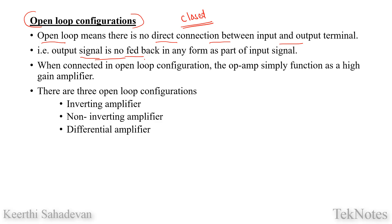Open loop means the output signal is not fed back in any form as part of the input signal. When connected in open loop configuration, the op-amp simply functions as a high gain amplifier.